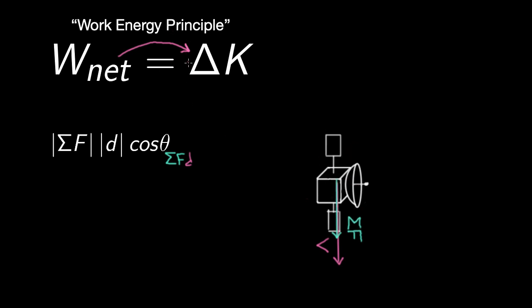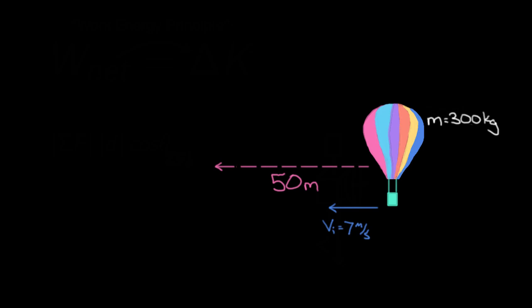The work-energy principle is convenient to get a conceptual or qualitative idea of what's going on, and it can also help you calculate things. Let's try one where you actually have to get a number. There's a 300 kilogram hot air balloon drifting to the left with an initial speed of 7 m/s, traveling a total of 50 meters to the left during this journey.